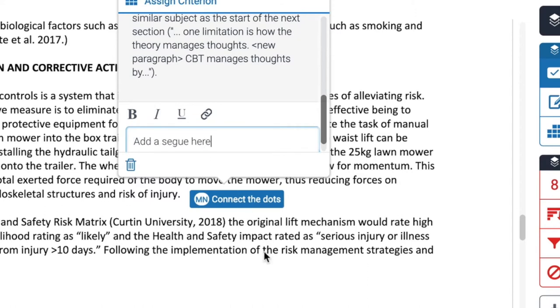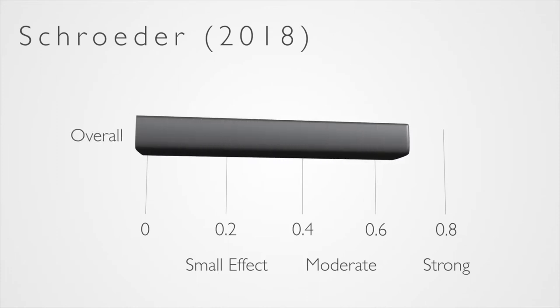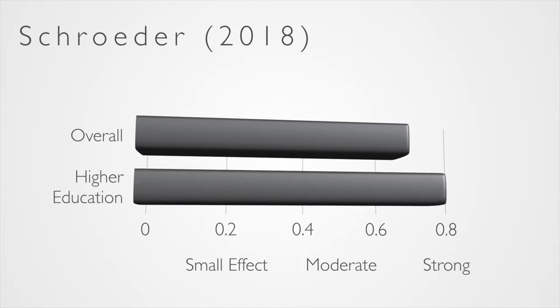These might seem like small changes, but they have big effects. In a recent meta-analysis of 58 studies, spatial contiguity, putting related things next to each other, improves student learning by a large effect size. This was particularly true for higher education, where concepts are more dynamic and complex.